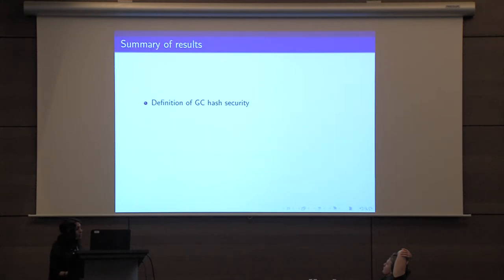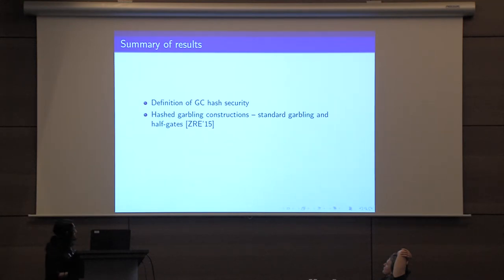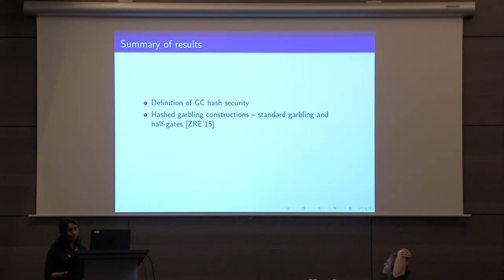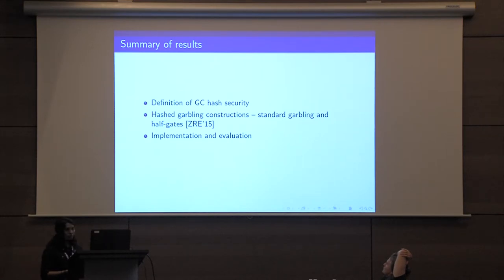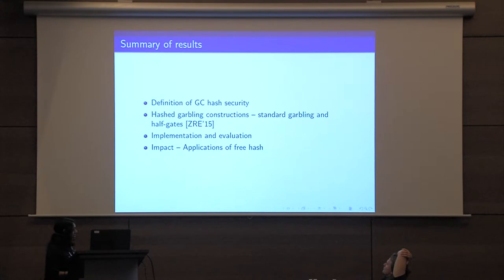Here is a summary of our results. We begin by giving a definition for garbled circuit hash security and then give hashed garbling constructions both for standard garbling and the state-of-the-art half gates construction. We then implement our construction and evaluate its performance, and finally discuss applications.